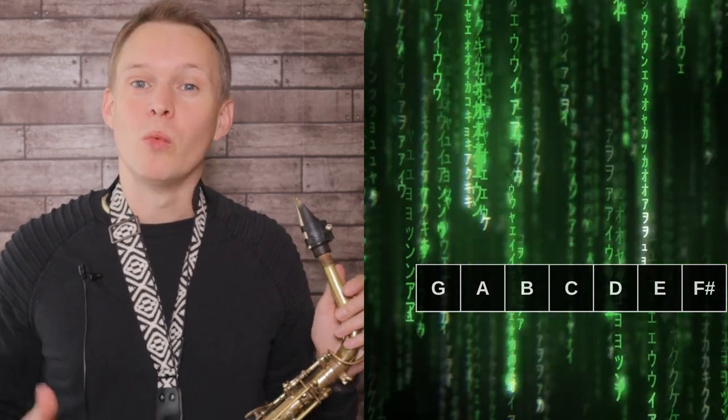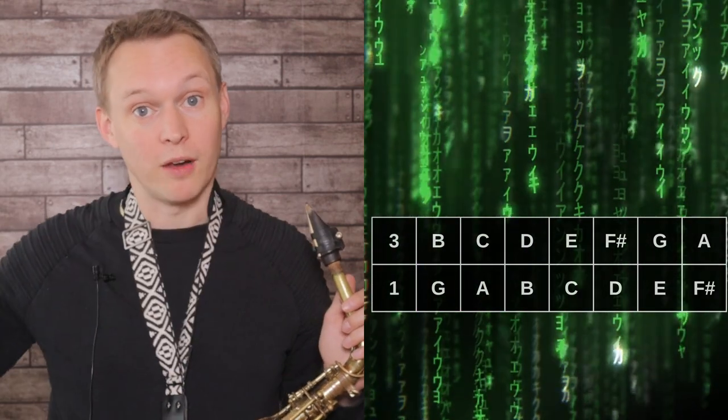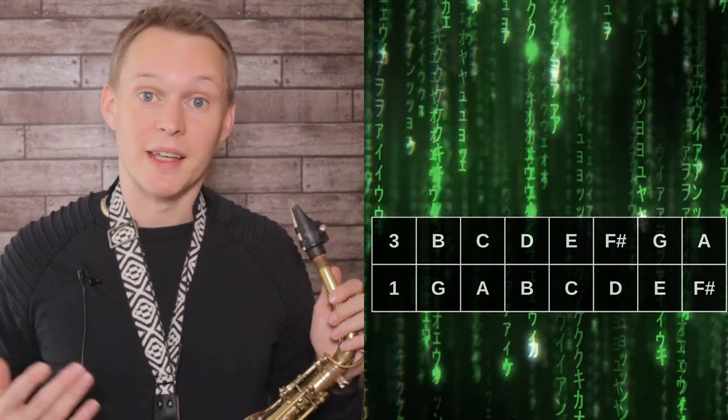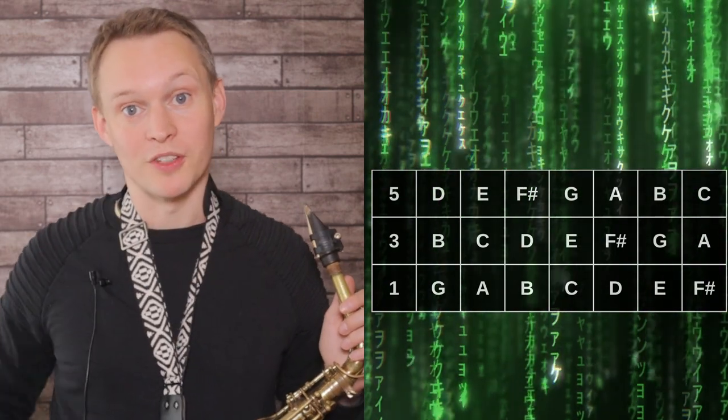So first of all we start by writing out the scale, and then to create the arpeggios or the triads or chords as it's also known, we're going to rewrite that scale but now starting from the third note and put that along the top. And then we're going to rewrite the scale again but now starting from the fifth note and put that along the top.